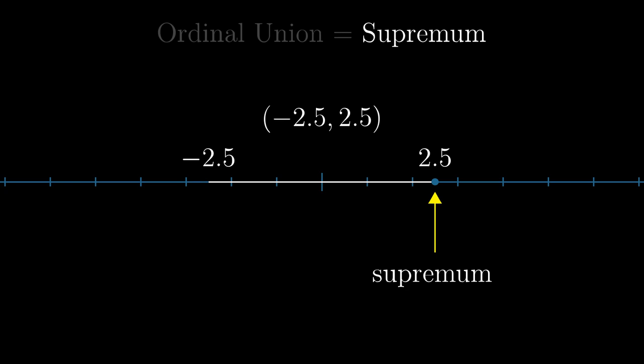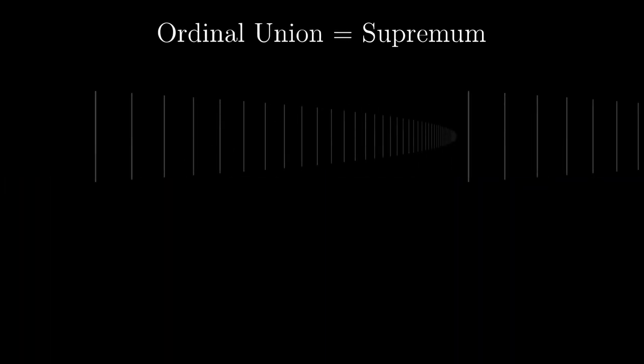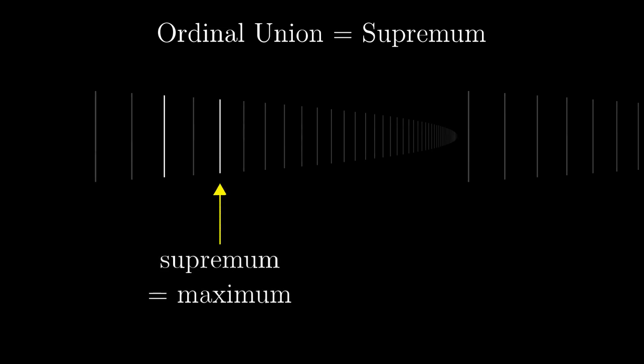More precisely, if there is a maximum, the supremum is that maximum. If on the other hand, the set doesn't contain a maximum, the supremum is the first element after the whole set. And this definition exactly corresponds to the ordinal union. The union of a set of ordinals interpreted as indices is either the maximal index here if there is one or the index just after the set.